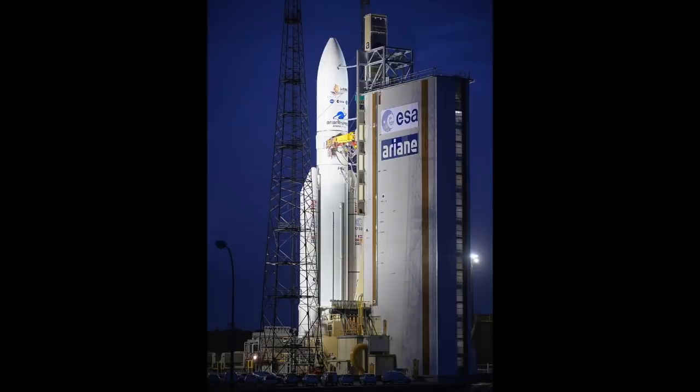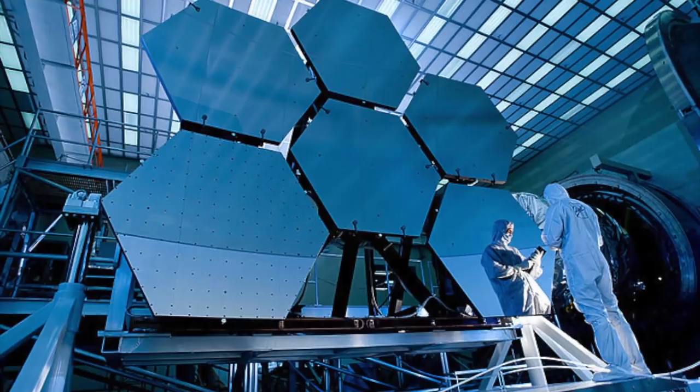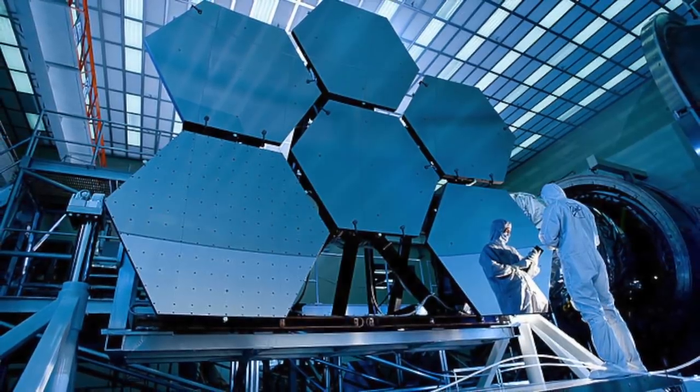The launch of the telescope from Kourou French Guiana was nothing short of picture perfect. The European Space Agency's Ariane 5 launch vehicle lived up to its highly reliable record, and not only put Webb into space, but did it very efficiently, which means that the telescope didn't have to expend as much fuel making adjustments to its trajectory. This is important because it has extended the life of the telescope dramatically.